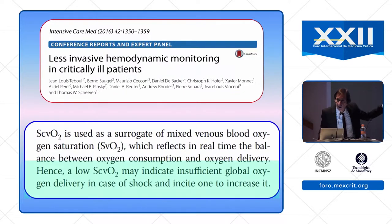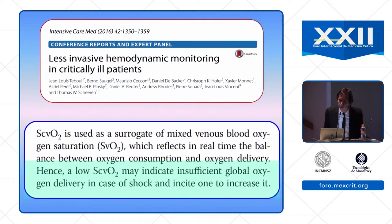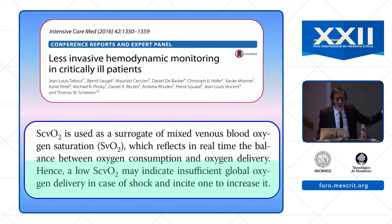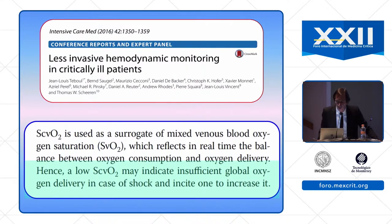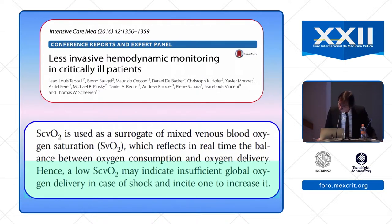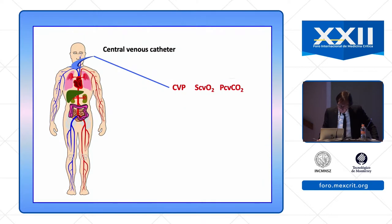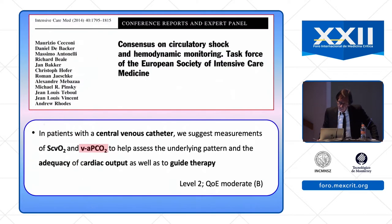In a paper published more recently, after the three multicenter RCTs, we still recommend measuring ScvO2 and state that when you have a low ScvO2 it indicates insufficient global oxygen delivery and this should incite to increase oxygen delivery. PcvCO2 is also recommended by the European Society of Intensive Care Medicine consensus conference report.